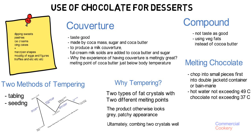Why does the temperature matter? Because if you have too much heat, it will make the chocolate separate and lose its gloss, becoming granular and solid rather than liquid.